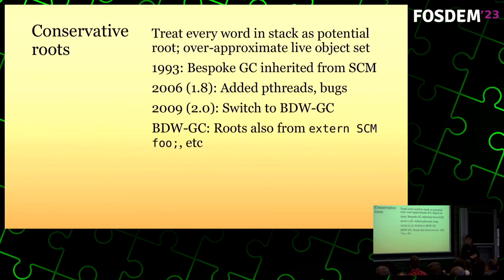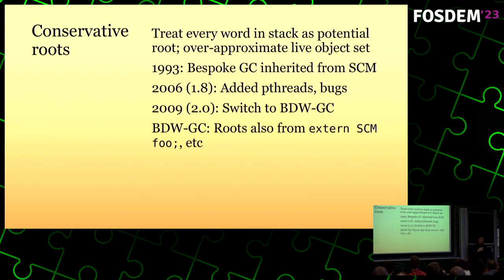The idea of conservative root scanning — if this is the first time you're hearing this, it's going to be wild. You take the machine stack and treat every word on it as if it's an integer. But if it's an integer which is within the range of objects managed by the heap, then we consider it maybe a pointer. We keep those objects alive. It's conservative in the sense that it doesn't compute the minimal set of live objects — it's an over-approximation. It seems to work historically, though it's not something you have guarantees on.